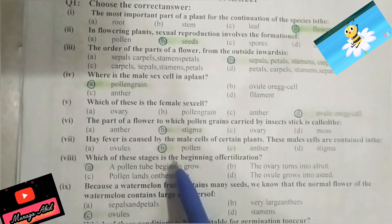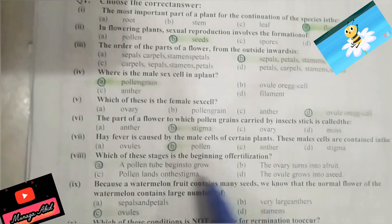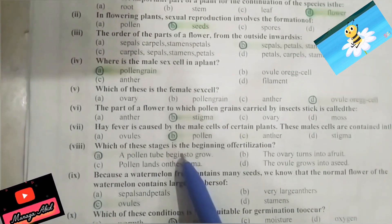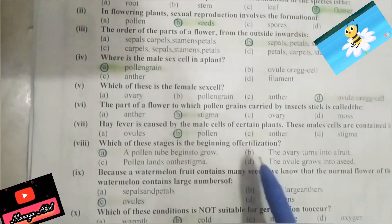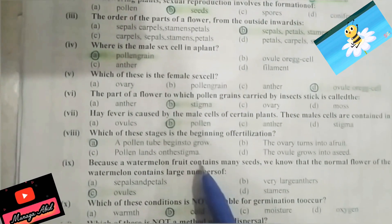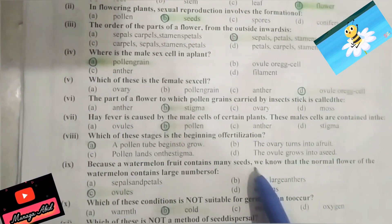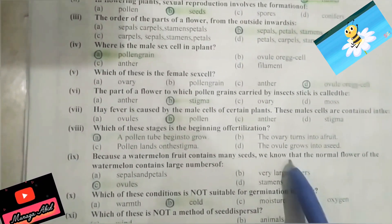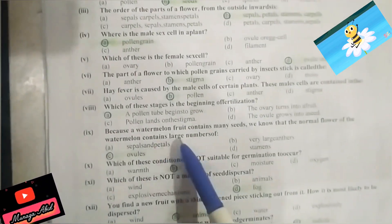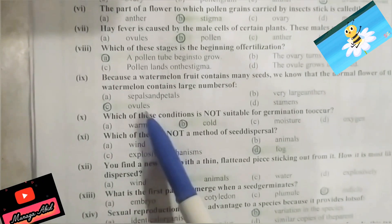Part 8: which of these stages is the beginning of fertilization? A pollen tube begins to grow — answer A. Part 9: a watermelon fruit contains many seeds because a normal flower of a watermelon contains a large number of ovules.